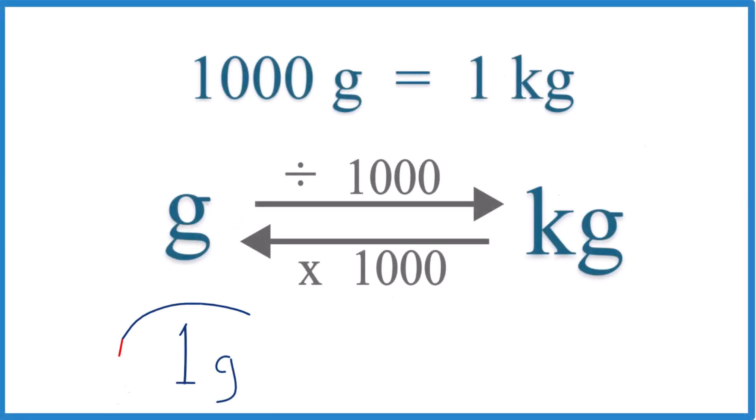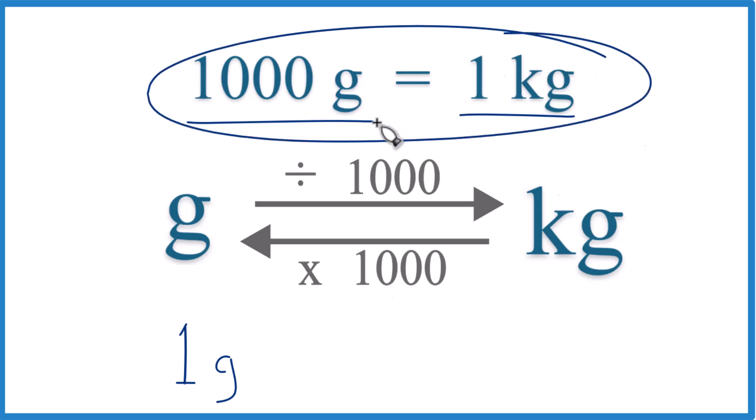So how do we convert one gram to kilograms? Well, one thing you need to know is that there are 1,000 grams in one kilogram. So this is a conversion factor, so you need to memorize that.